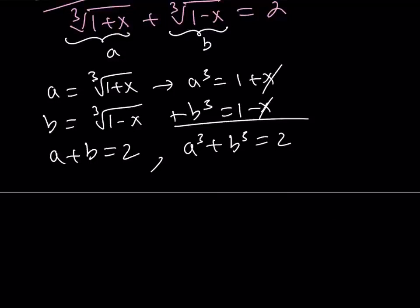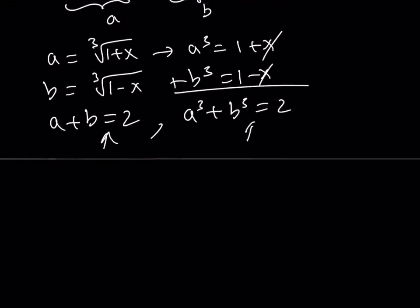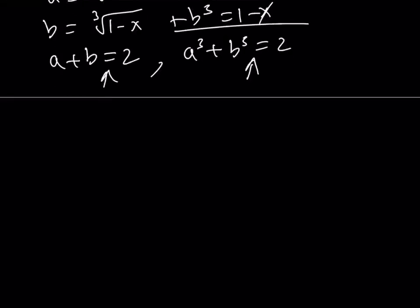So, now we have a system. This one and this one. Let's go ahead and solve the system. A cube plus B cubed is a sum of two cubes. So, it is factorable. Let's go ahead and factor it.